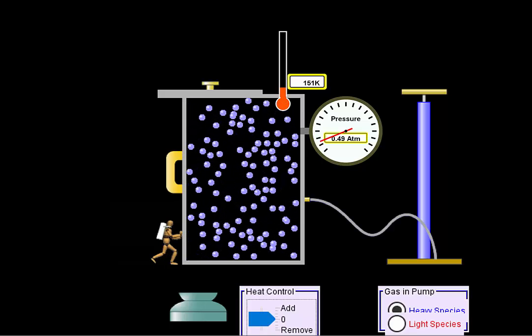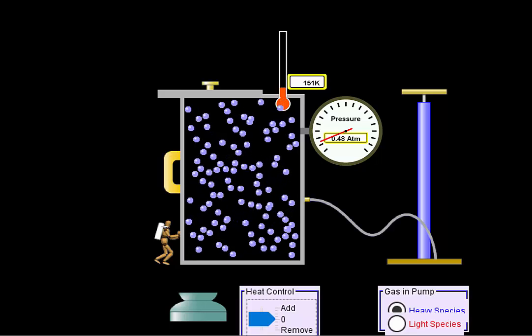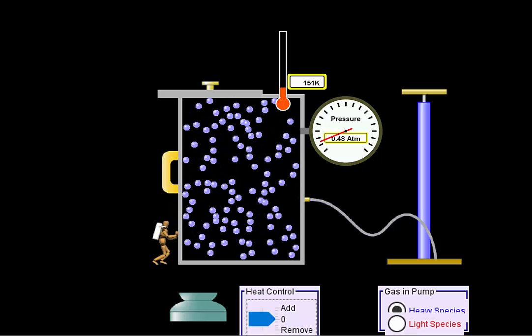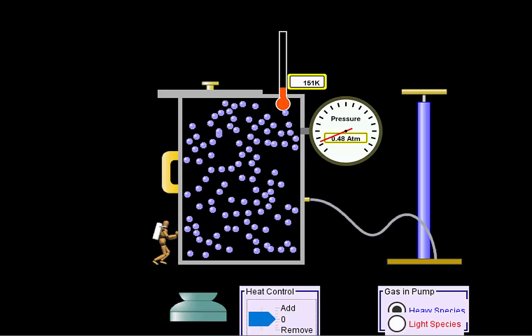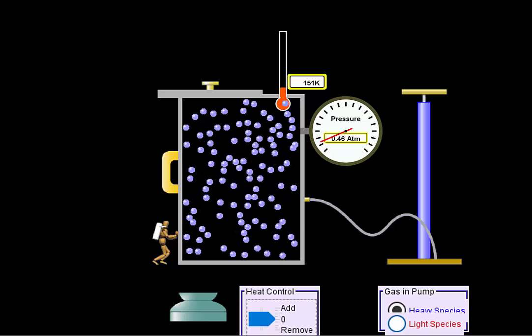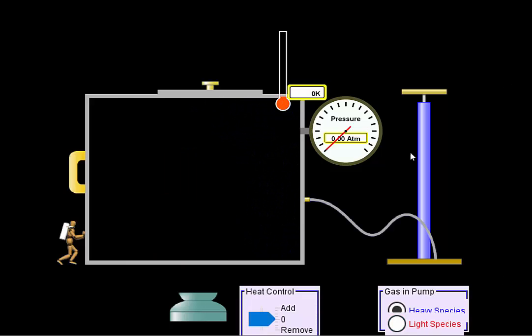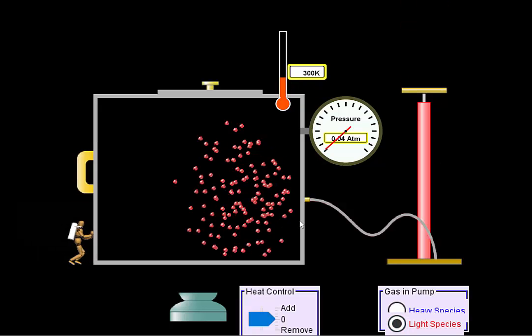So that means that the volume and temperature are directly proportional. Meaning as one goes up, the other goes up. If one goes down, the other goes down. Now, let's reset this. And let's see if the same thing happens when we use light molecules, molecules that are not that heavy.